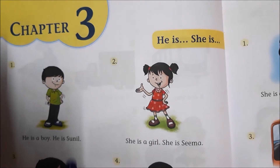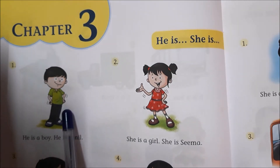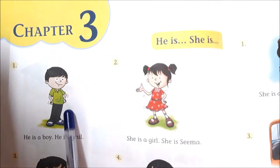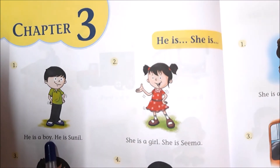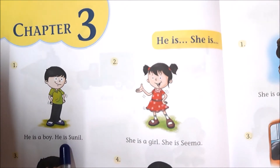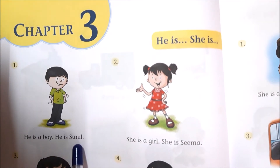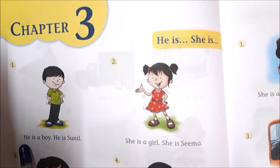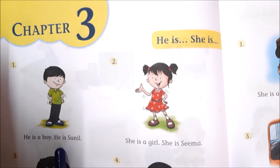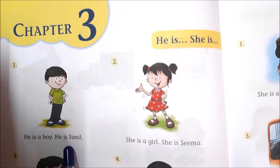Now look at this picture. It's the picture of a boy. And your book says, he is a boy. He is Sunil. So you can repeat it after me: he is a boy. He is Sunil.